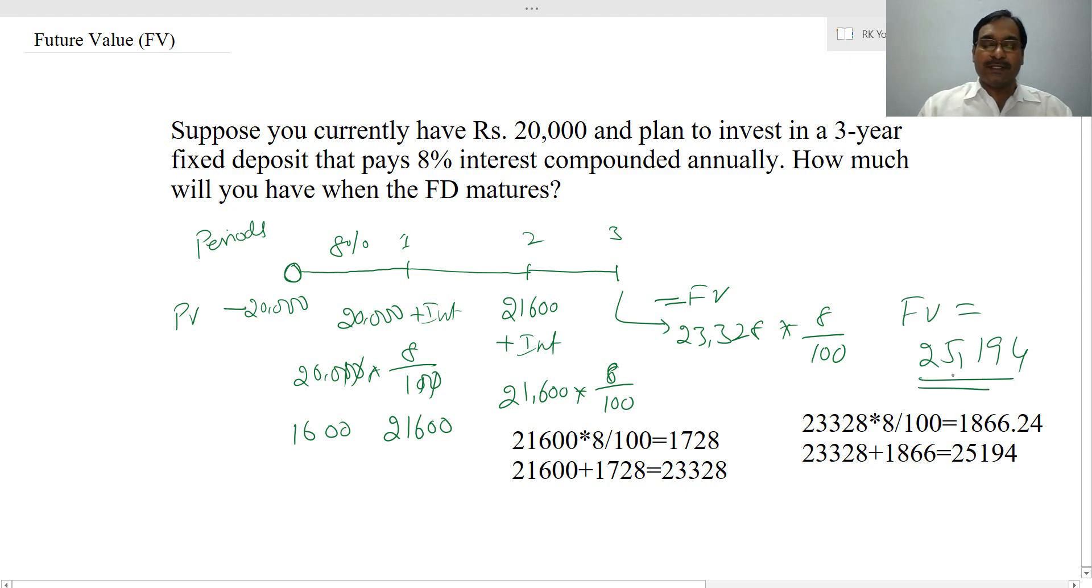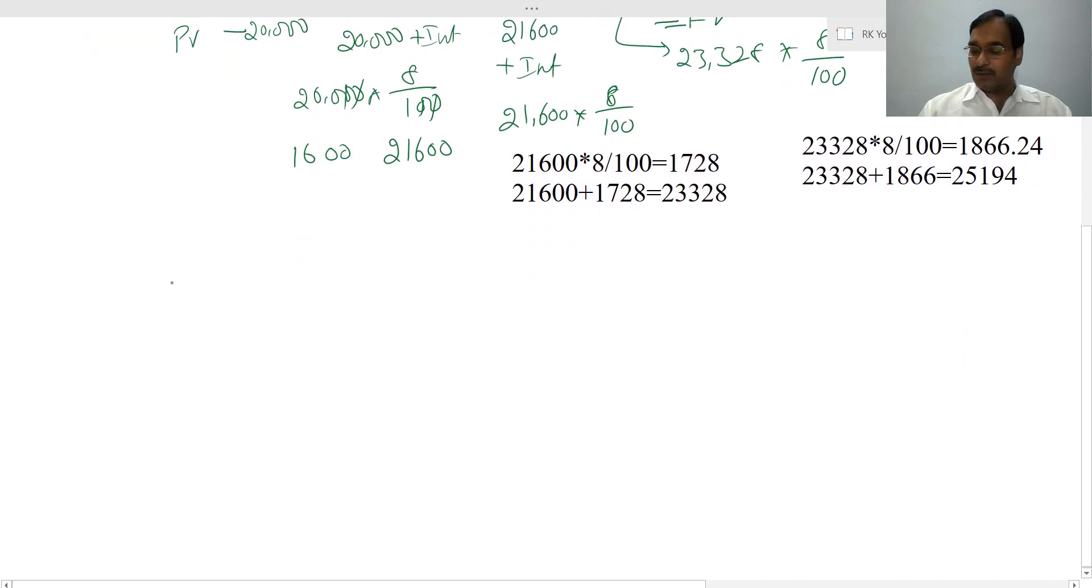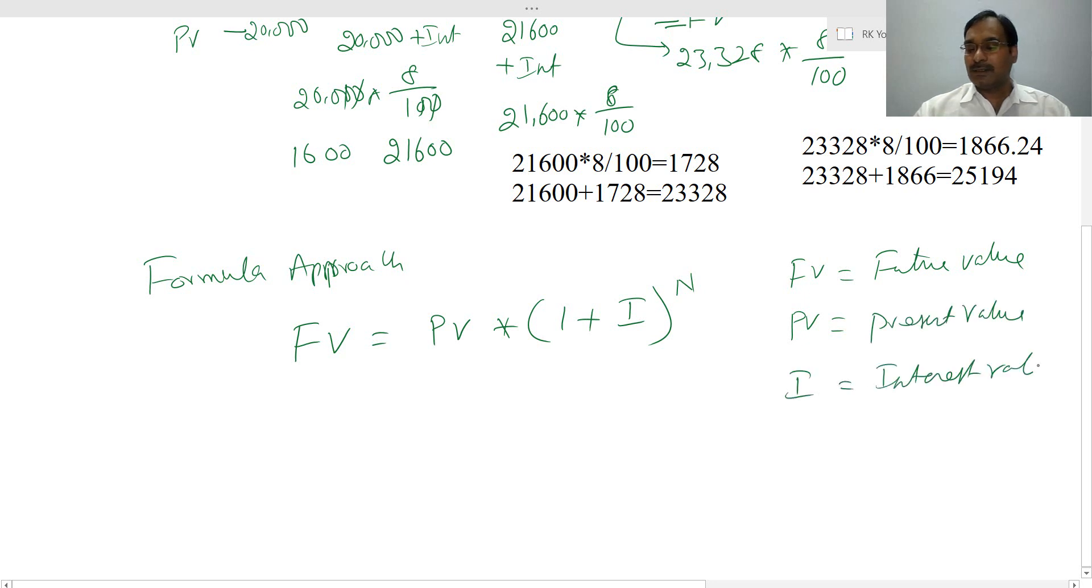Do you find this a little difficult? Instead of doing all this lengthy calculation, we can use the formula approach to calculate the future value. So your future value equals present value times (1 plus i) to the power of n, where FV is future value and PV is present value. i is interest rate expressed in decimals and n is duration or number of periods.